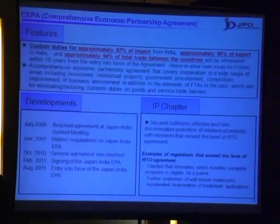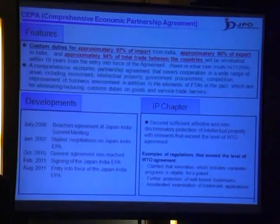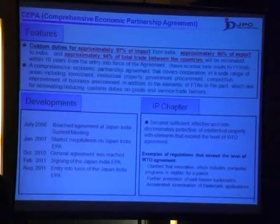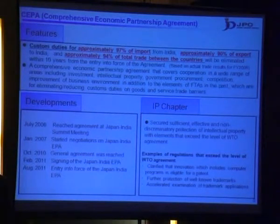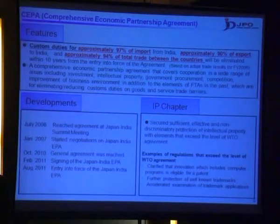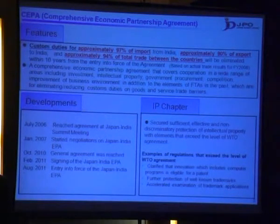I'd like to talk about the Japan-India Comprehensive Economic Partnership Agreement. The CEPA, which was signed by the two countries in 2011, is a Comprehensive Economic Partnership Agreement that covers cooperation in a wide range of areas including investment, intellectual property, government procurement, competition, and the improvement of the business environment.